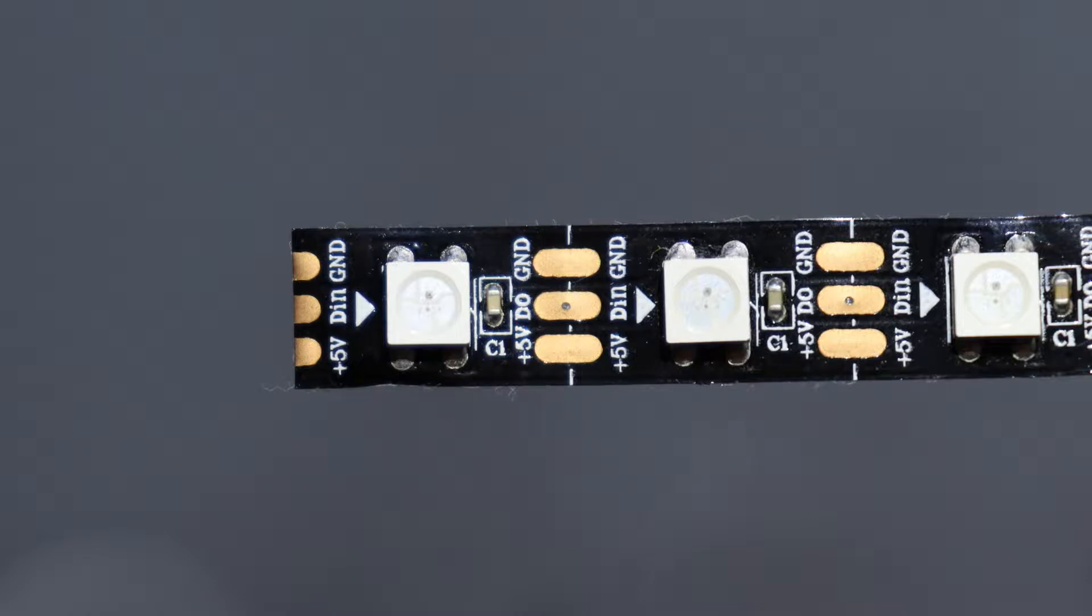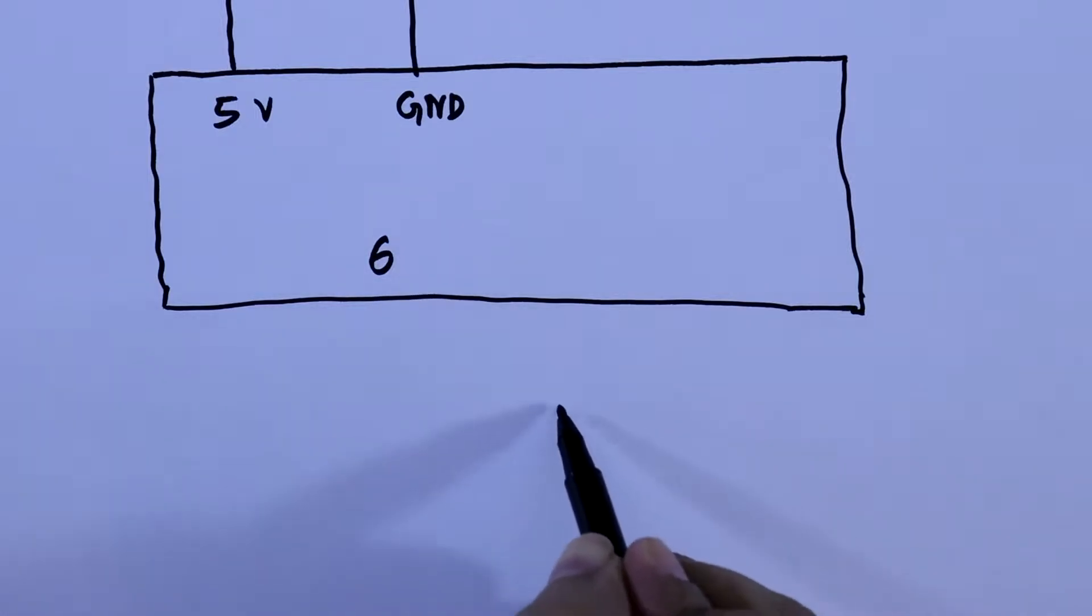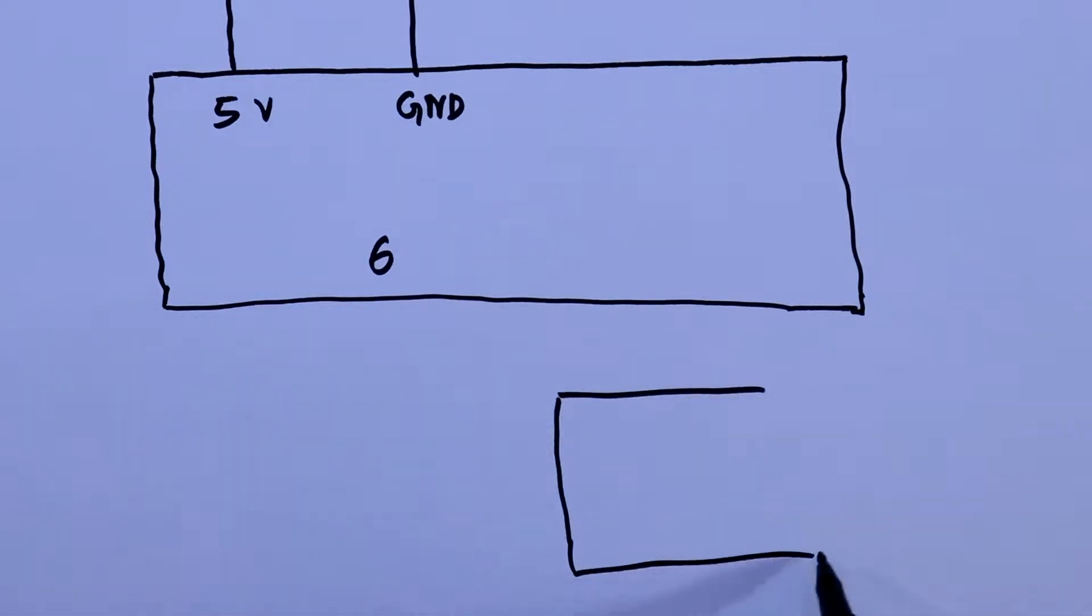As you can see it has 3 pins: plus 5 volt, the middle one is din, and the third one is ground. Let's say this is the LED strip. It has 3 pins: plus 5 volt, ground, and the middle pin is din.